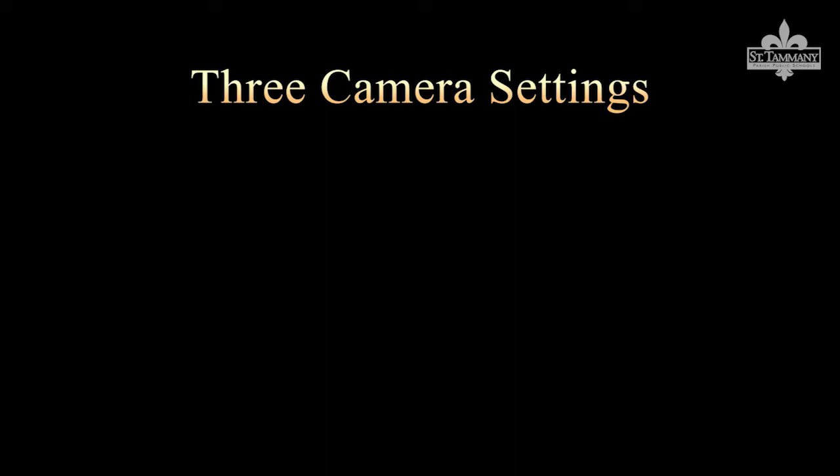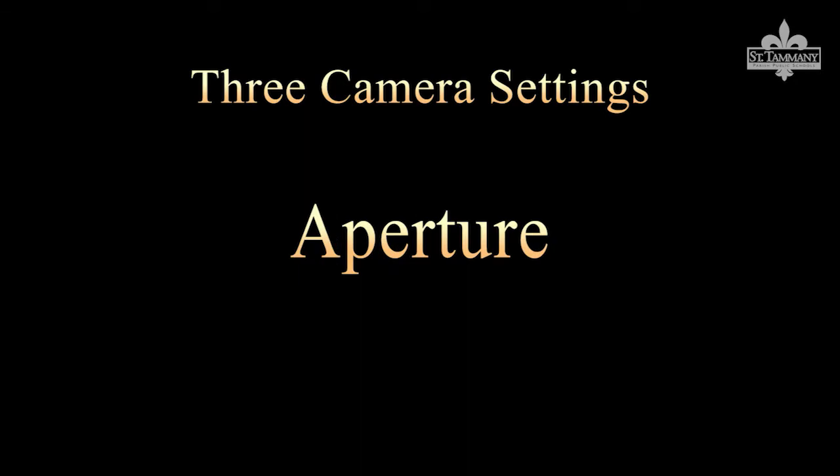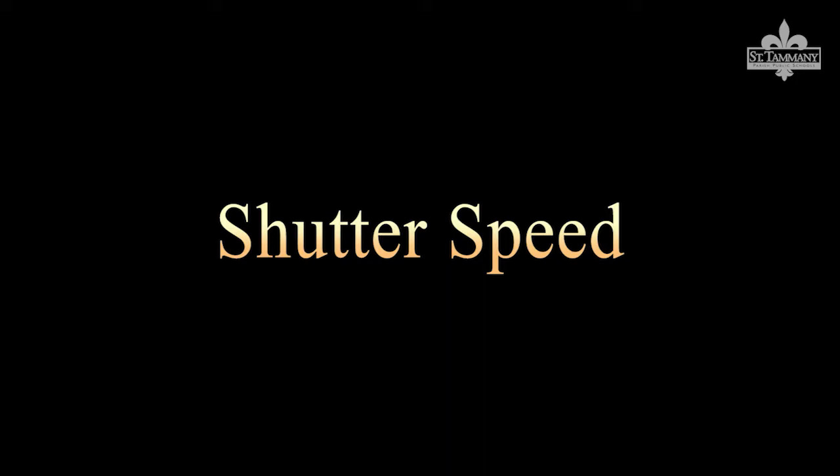When taking pictures, there are three camera settings that work together to create beautiful photos. These three settings are shutter speed, aperture, and ISO.